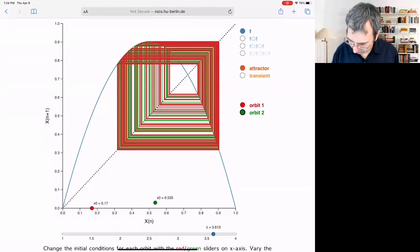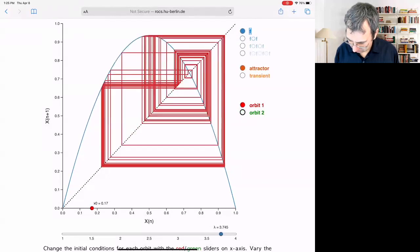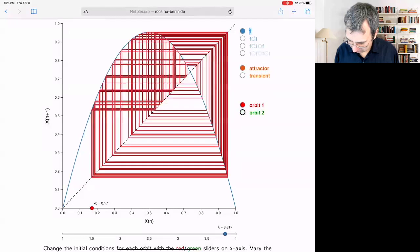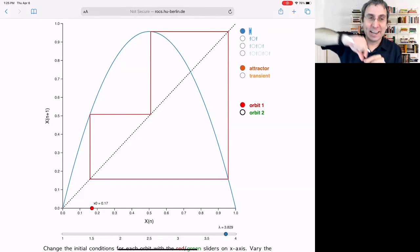If I get to where the period three is, period three was around 3.82 something down here. I'm trying to just barely adjust this. What do you know? There's a periodic window. So this is a period three orbit. It's going between those three points along the diagonal line.